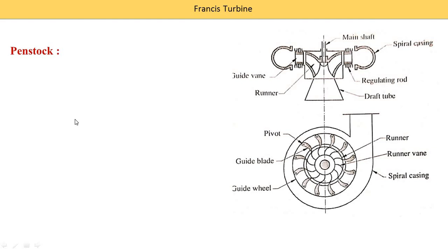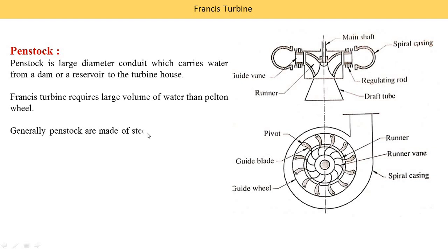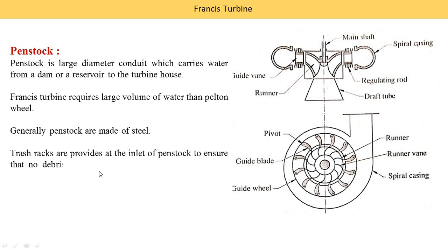First is the penstock. Penstock is a large diameter conduit which carries water from a dam or reservoir to the turbine house, supplying water up to the turbine inlet. Francis turbines require a larger volume of water than Pelton turbines. Penstocks are made of steel or concrete depending on the quantity of water and available head. Trash racks are provided at the inlet to ensure no debris or foreign matter enters the penstock.